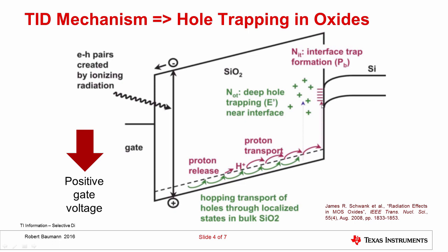For MOSFETs, it's less important — typically the quality of the oxide is such that it doesn't do too much damage, but you need to be aware of it. So these are the two mechanisms: radiation is absorbed, it creates electron-hole pairs, electrons are more mobile than holes and get quickly removed, leaving a positive charge which then moves towards the interface. It's this positive charge, as well as the interface state creation by protons, that causes all the problems related to total dose.